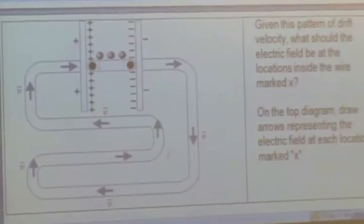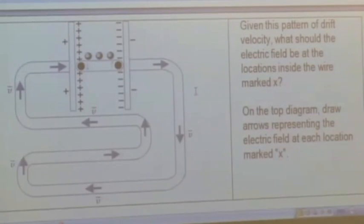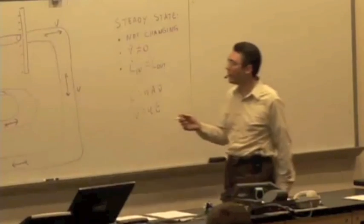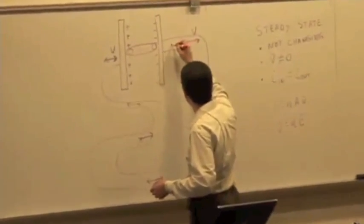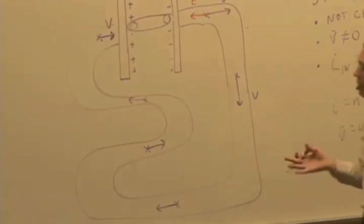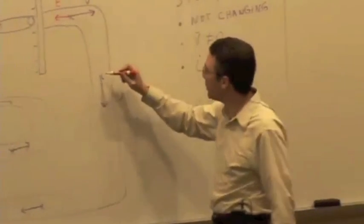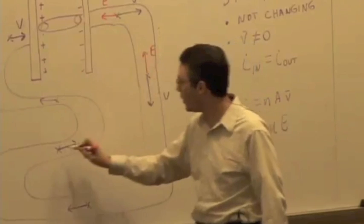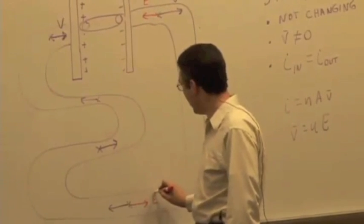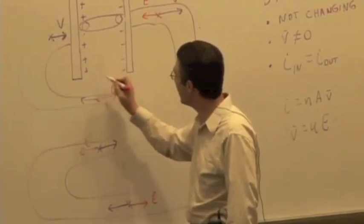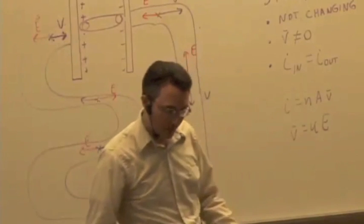Given that the drift velocity looks like that in steady state, what should the electric field be at each of those locations? The electric field should point in the opposite direction of the electron drift velocity — because these are electrons, the force is opposite to the field. The relative magnitudes should be the same everywhere too, because from v = uE, the same drift speed means the same electric field. So E points along the wire in the direction opposite to electron motion, uniform throughout the circuit.